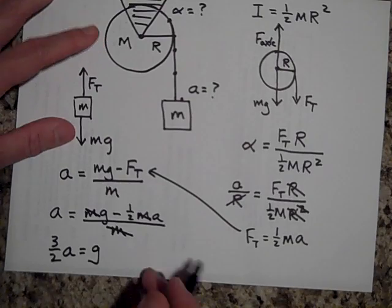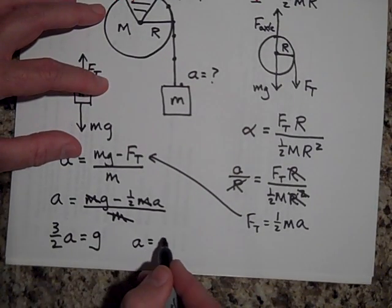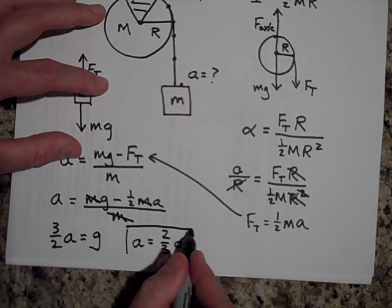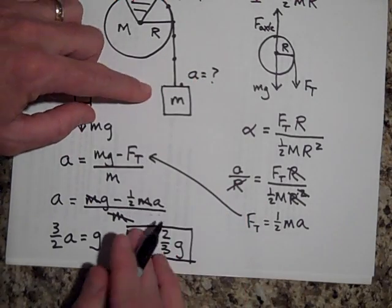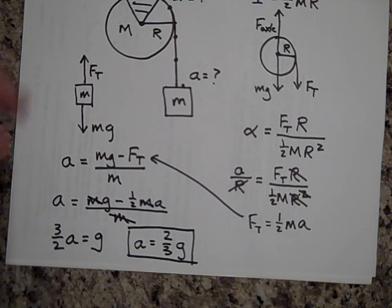So it looks like a is two-thirds of g. It's good that it's not bigger than g because g would be if I cut the rope, that's the maximum acceleration it could have. So it's two-thirds of g.